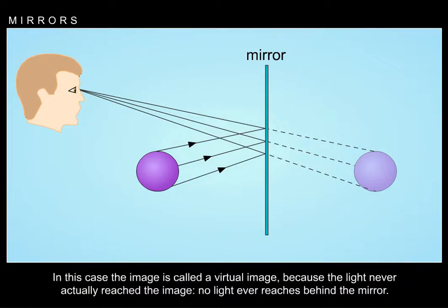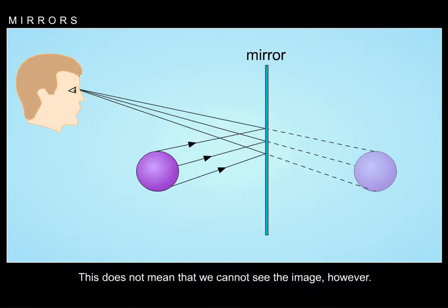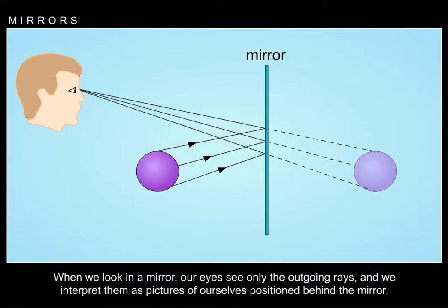In this case, the image is called a virtual image, because the light never actually reached the image — no light ever reaches behind the mirror. This does not mean that we cannot see the image, however. When we look in a mirror, our eyes see only the outgoing rays, and we interpret them as pictures of ourselves positioned behind the mirror.